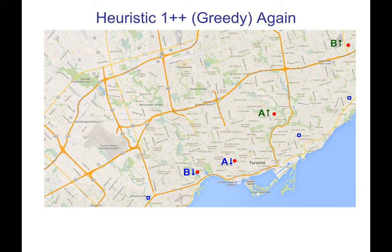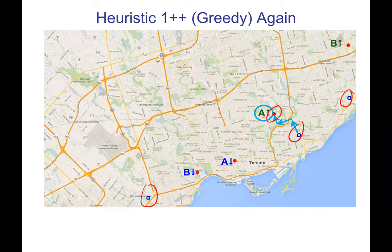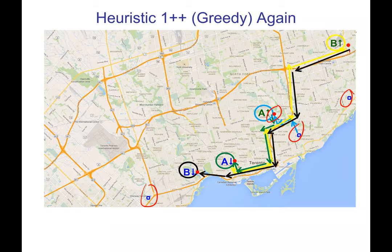This is our heuristic from last week. It starts off by looking at all the depots — we've got three depots — and it's going to choose which one has the smallest travel time to some pickup. It starts by going there, then looks at what's the smallest travel time to the next legal thing: it could pick up B or drop off A, so it drops off A. Next it picks up B since it can't drop off B yet, then drops off B, and finally goes to the closest depot. Unfortunately, there's a fair amount of backtracking, so this was not the best solution.